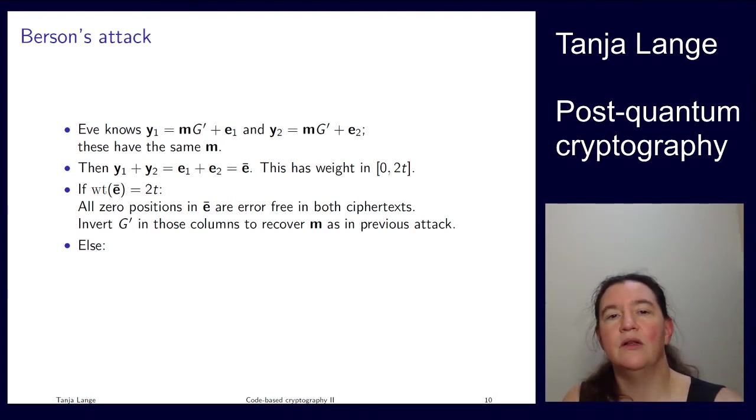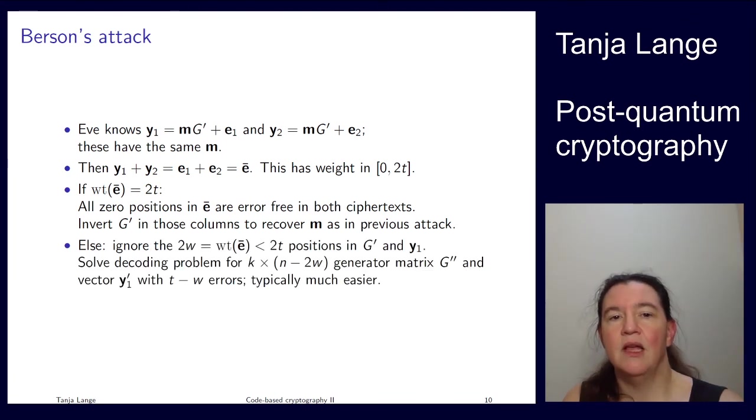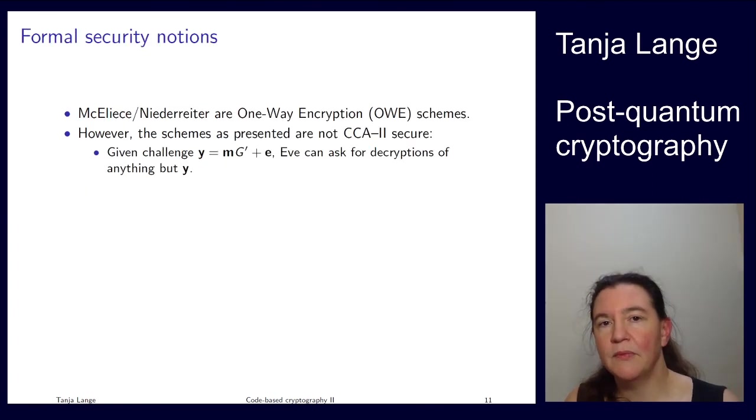If not, well, we know now some positions which are set. So we know those, say, let's call this 2w, we know those positions are definitely in error, so we ignore those. And then we have just the missing 2t minus 2w positions to find in some shortened version of g prime. So that is a much smaller decoding problem, which is typically much, much easier. So the easiest is if there is no overlap, but even if there is overlap, this does save a lot. And, well, given the length, there is a fairly low chance of having much overlap.